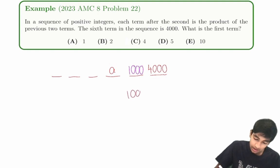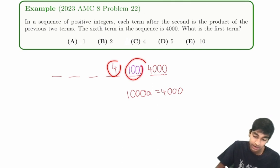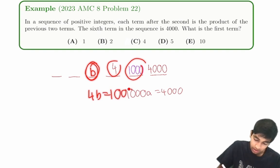we would have that 1,000a is equal to 4,000. So a would be 4. And similarly, with these two terms, we could then find the value of this term by letting this be some variable and then saying 4b is 1,000. And then we can keep doing that to get all the terms.